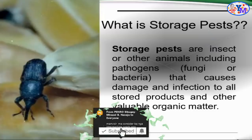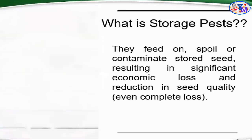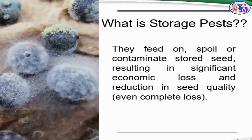First, we need to define what storage pests are. Storage pests are insects or other animals, including pathogens like fungal organisms or bacteria, that cause damage and infection to all stored products and other valuable organic matter. They can be insects, other animals like rats and birds, and fungal organisms that cause infection to stored seeds. These storage pests feed on, spoil, and contaminate stored seeds.